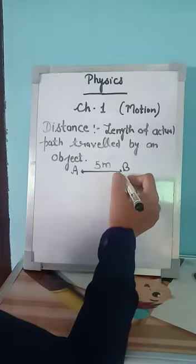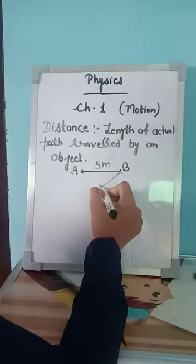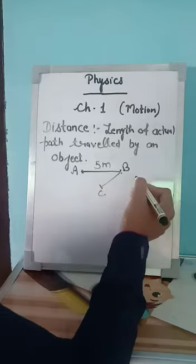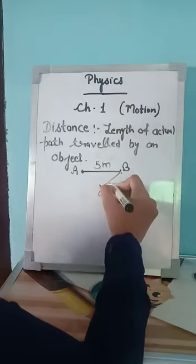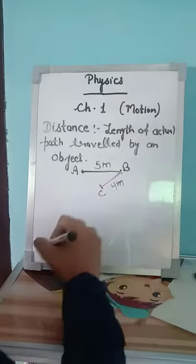B पे जाने के बाद, वो C पे जाता है. And the length between B to C is 4 meters. Clear?